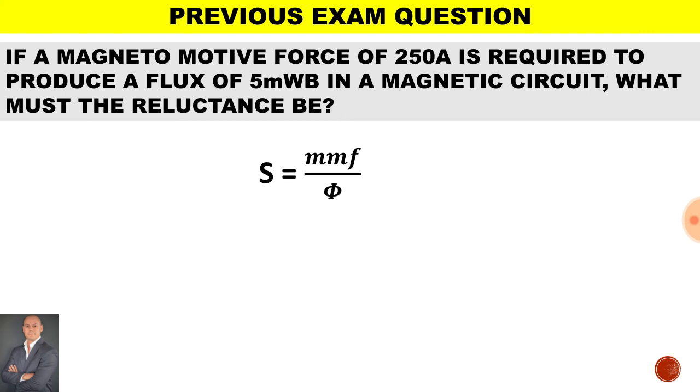So to calculate the reluctance, it will be MMF, which is represented by the letter F, over the magnetic flux measured in Weber. Therefore 250 amps divided by 5 milliweber, and we end up with a reluctance of 50,000 amps per Weber.